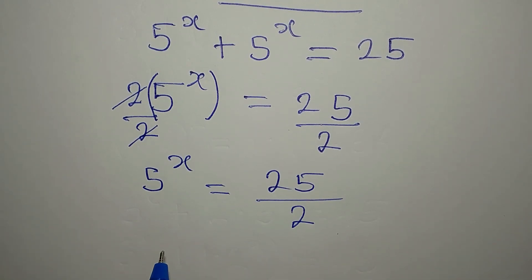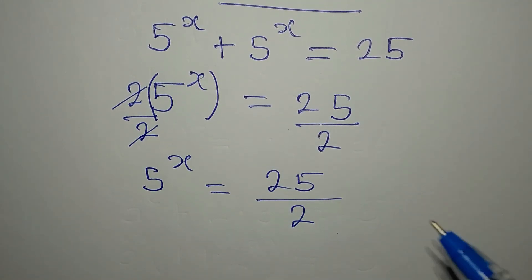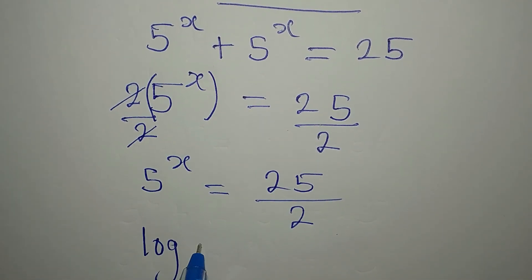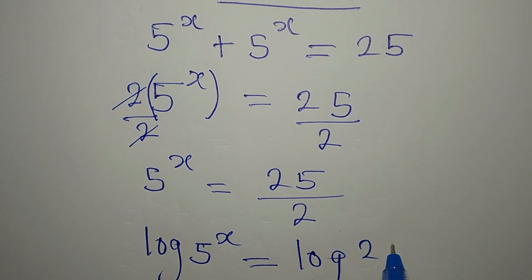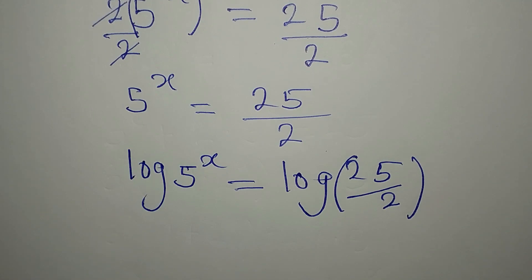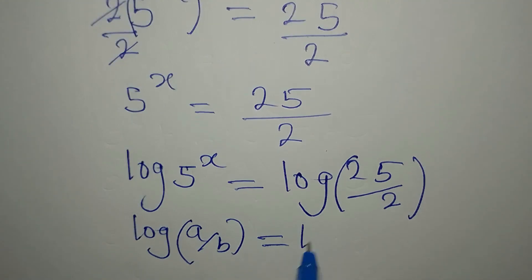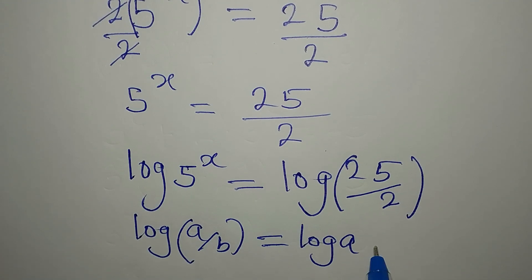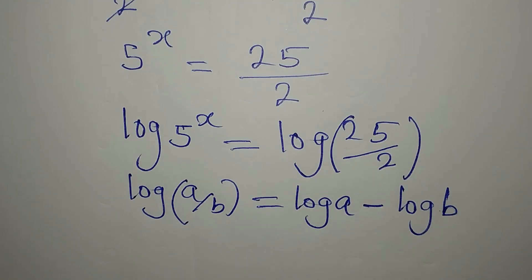There's nothing we can do but take the log of both sides. Since I don't want us to have a decimal — if we divide this we'll have 12.5 — so we're going to take the log of 5 to the power of x, and on the other side we have log of 25 divided by 2. Now, if you have log of a over b, this is the same as log a minus log b — that's one of the laws of logarithm.